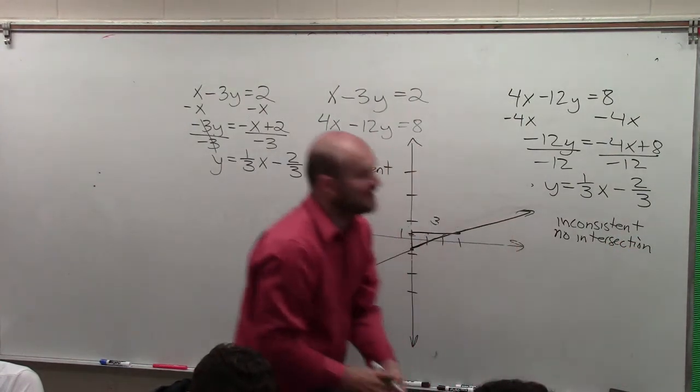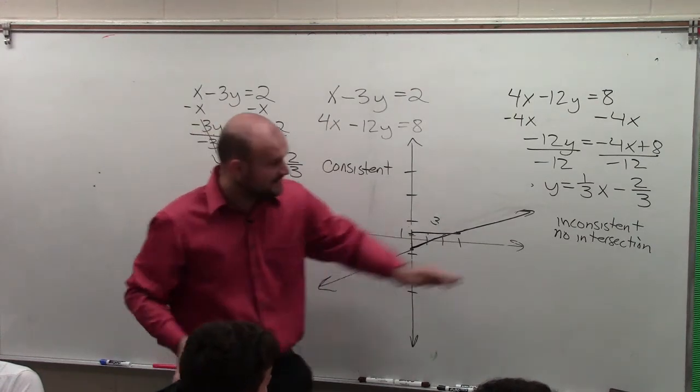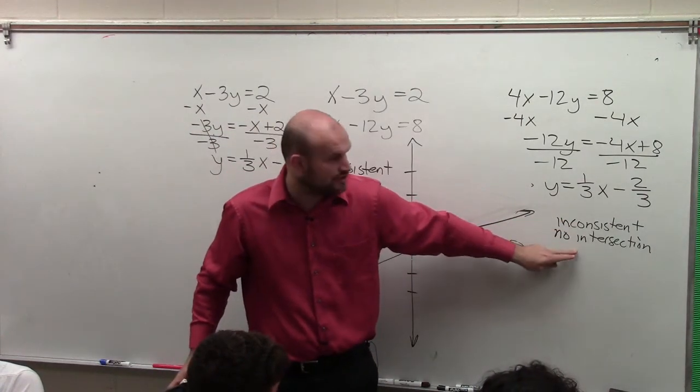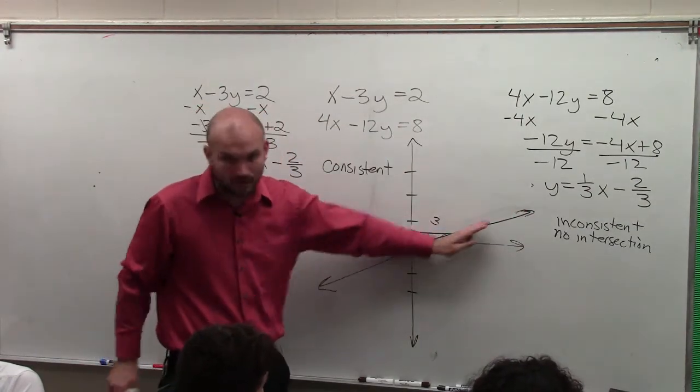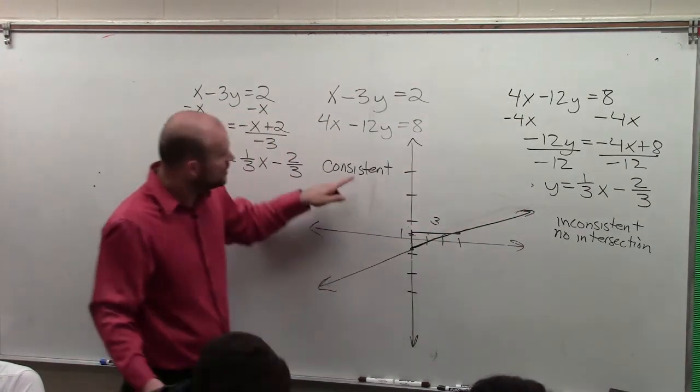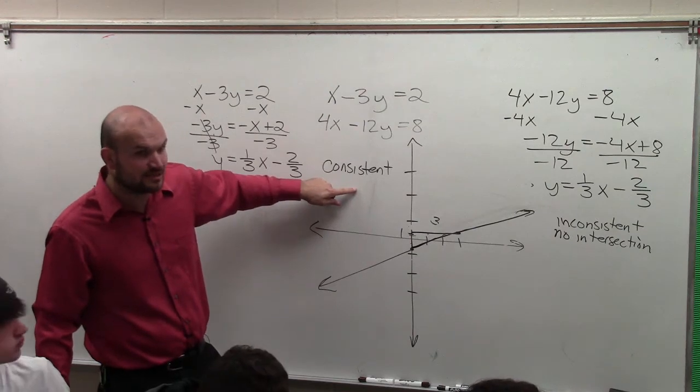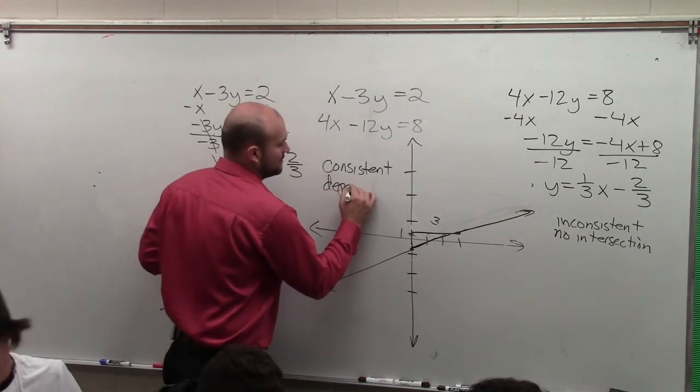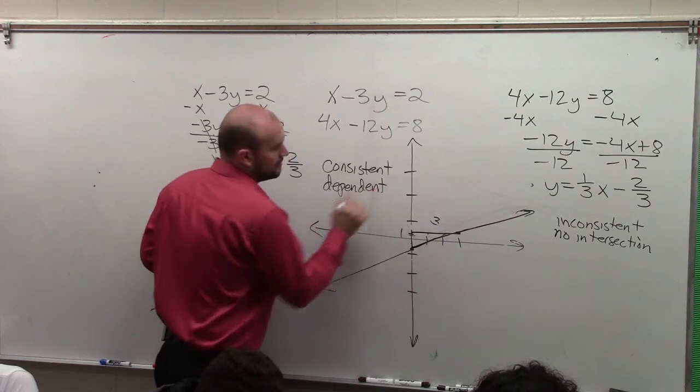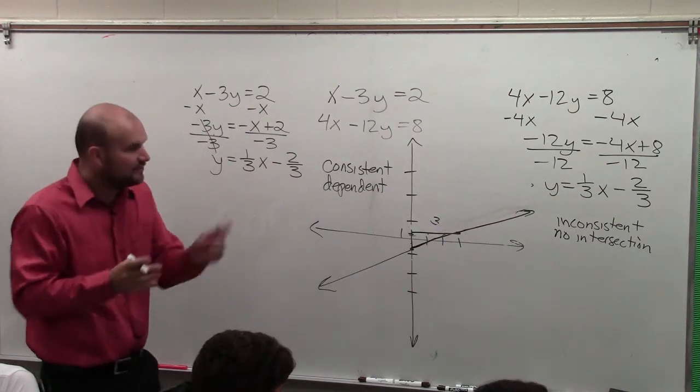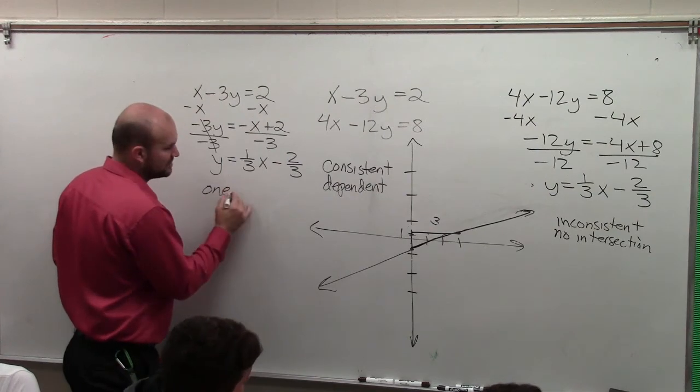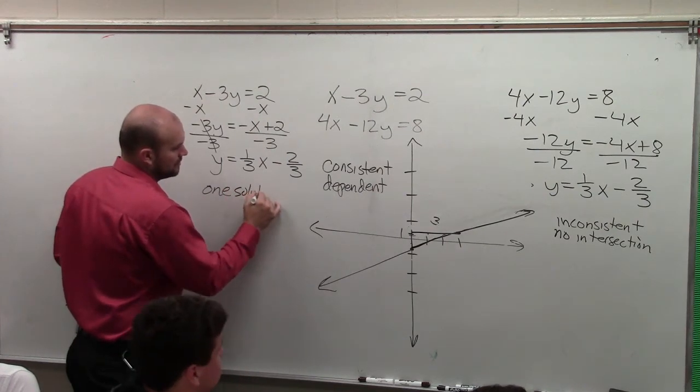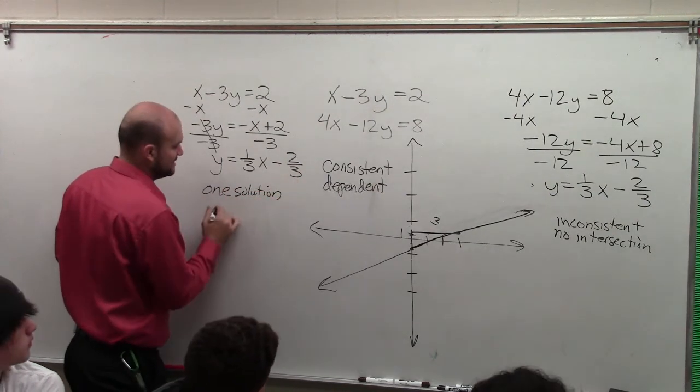So if they never intersect, they're parallel lines, they're inconsistent. That means there's no intersection. These infinitely intersect. They're always going to intersect each other, on top of each other. So it's a consistent, meaning it has a solution, and then it is dependent. Because there's infinitely many points. If there's only one point, if there's only one solution point, or one intersection point, then it's consistent independent.